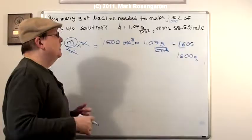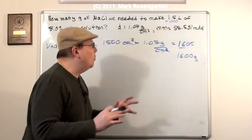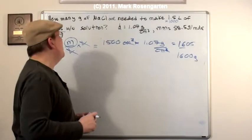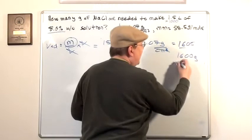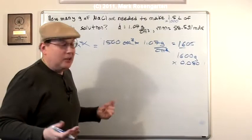Now, according to this, it's an 8% weight-by-weight solution. So we're going to take 8% of that. We're going to multiply it by 0.080. All right, write 8% divided by 100. And this comes out to 128, again, two sig figs, 130 grams of salt.